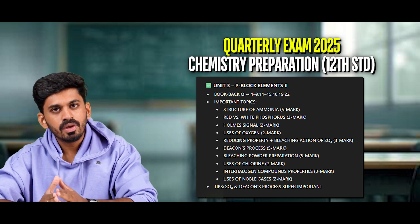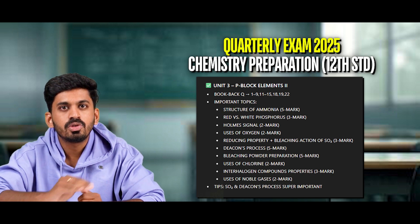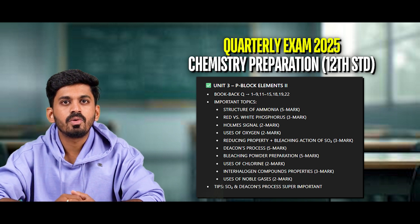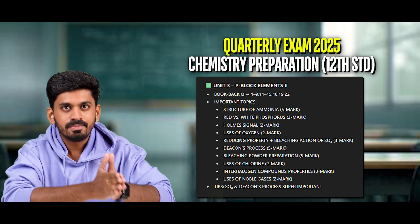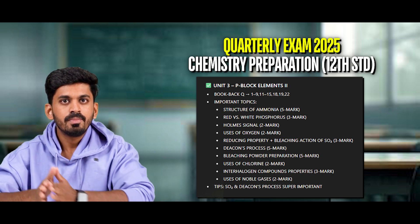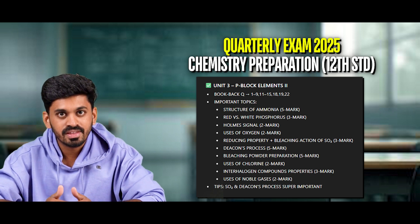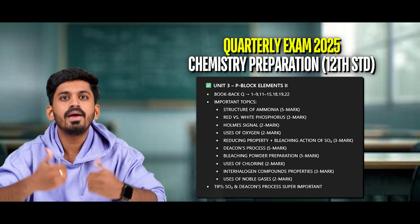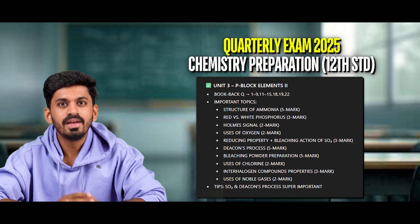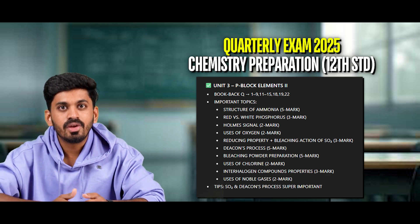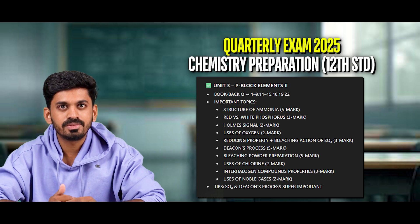This is 2 marks. Uses of phosphine — this is 2 marks. This is 2 marks. Reducing property of SO2 — this is 2 marks. Bleaching action of SO2 — this is 3 marks. Equation-based explanation. This is 5 marks. This is 5 marks. Chlorine manifest base equation. Bleaching powder preparation — this is equation-based process.